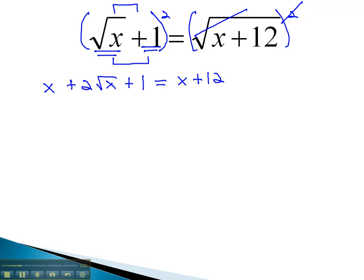Now that we've cleared one root, we'll go after the other root by isolating the term with the other root by subtracting x and subtracting 1 from both sides. Conveniently, the x is subtracted out on the right as well. We have 2 times the square root of x equals 11.